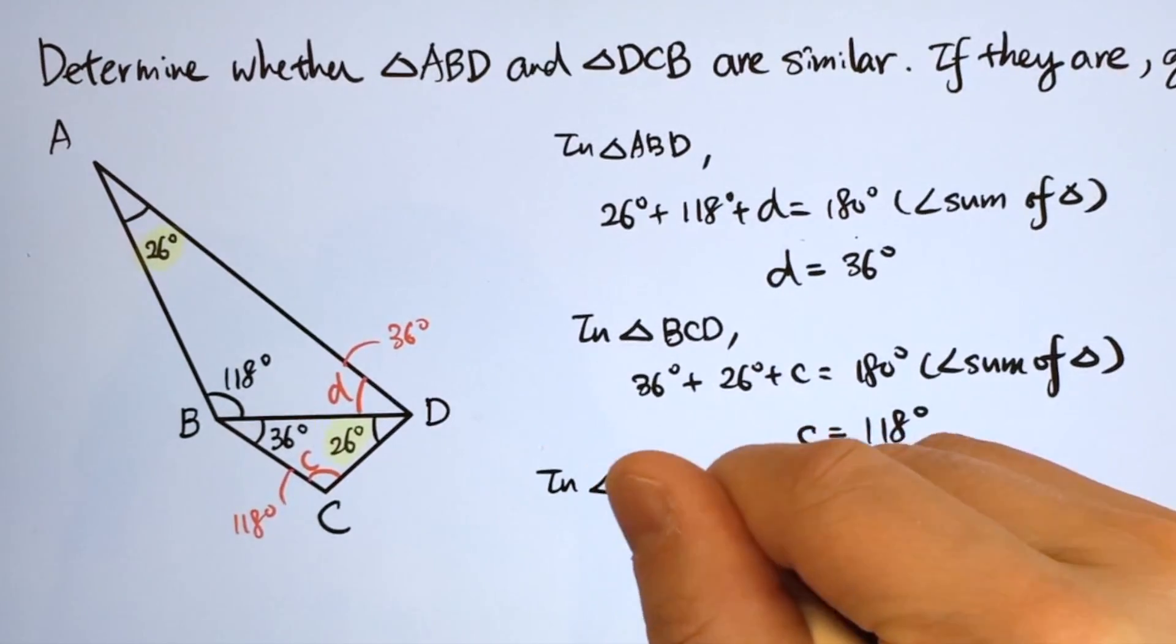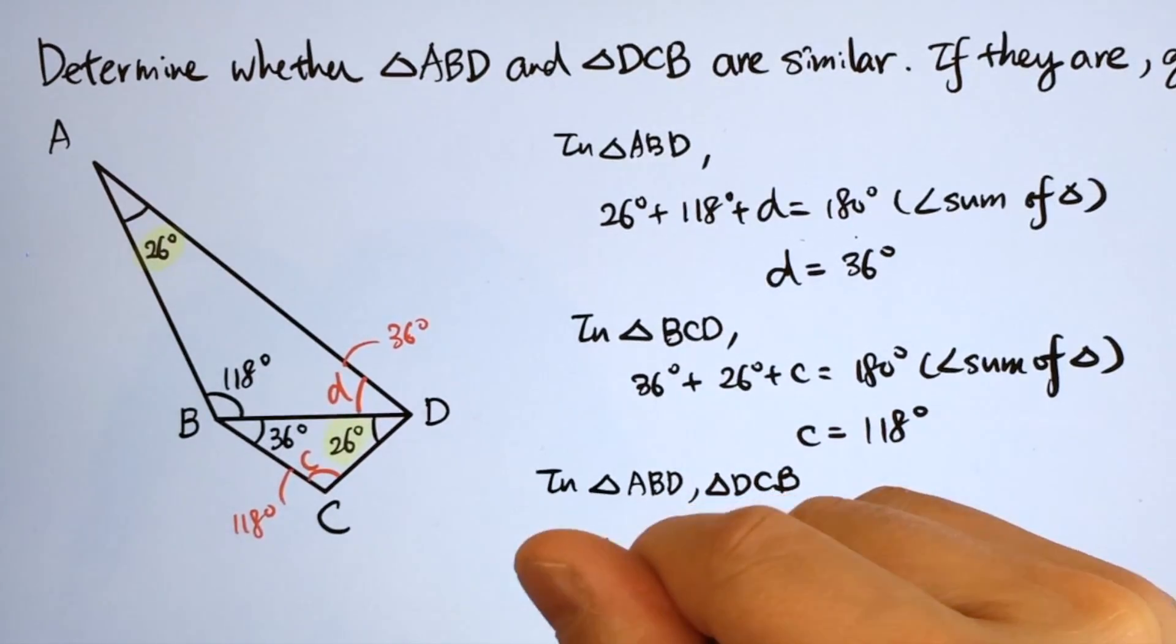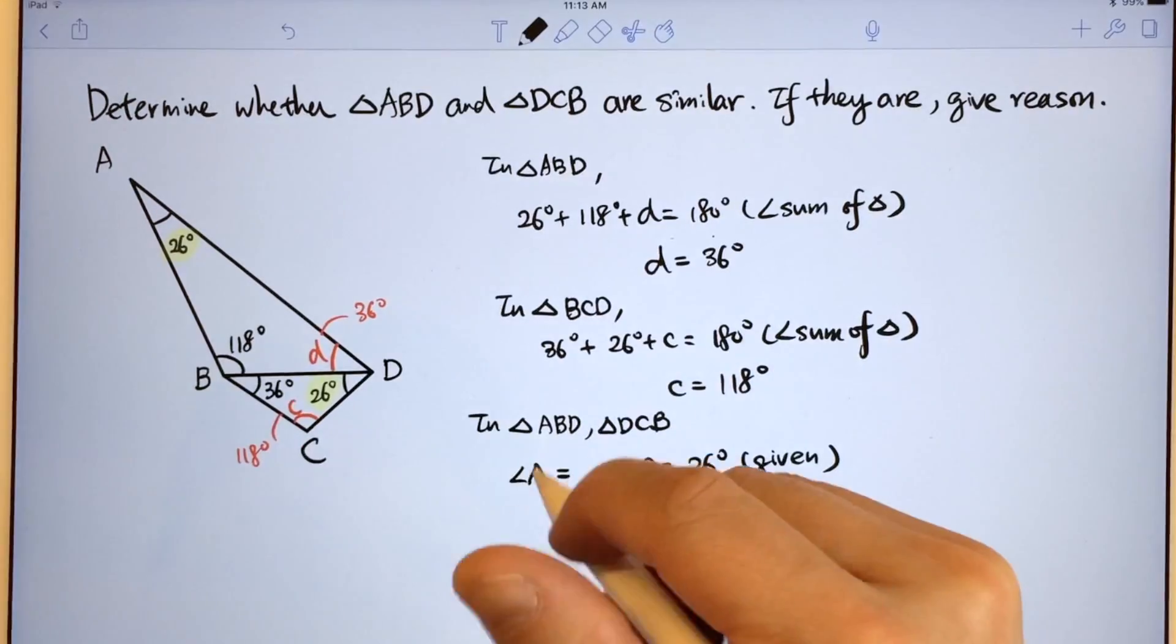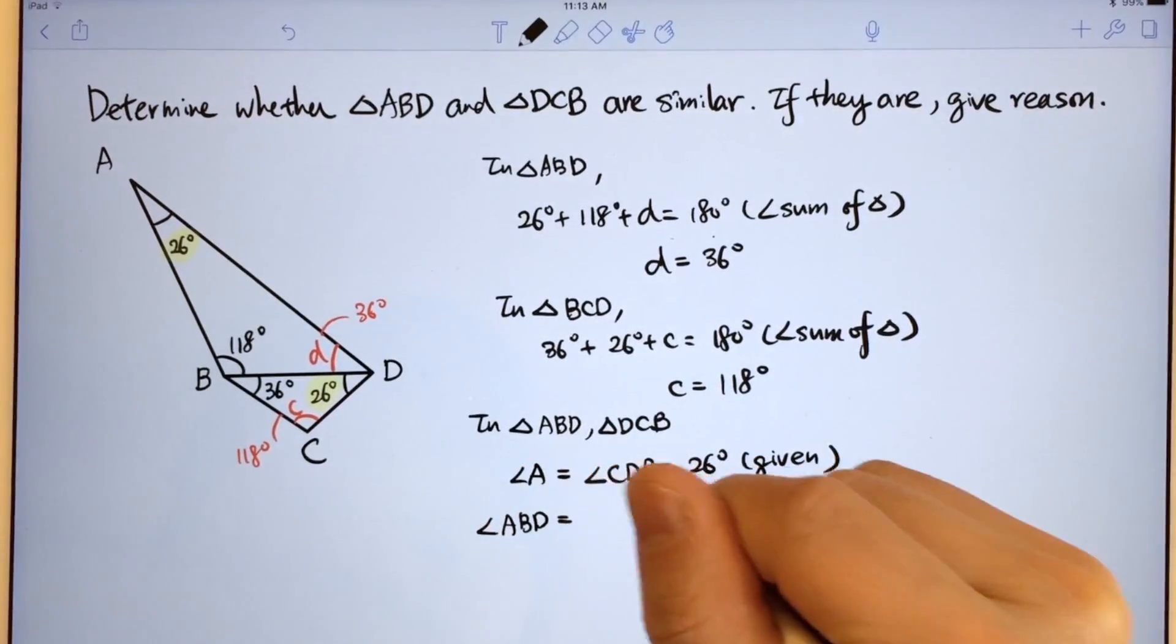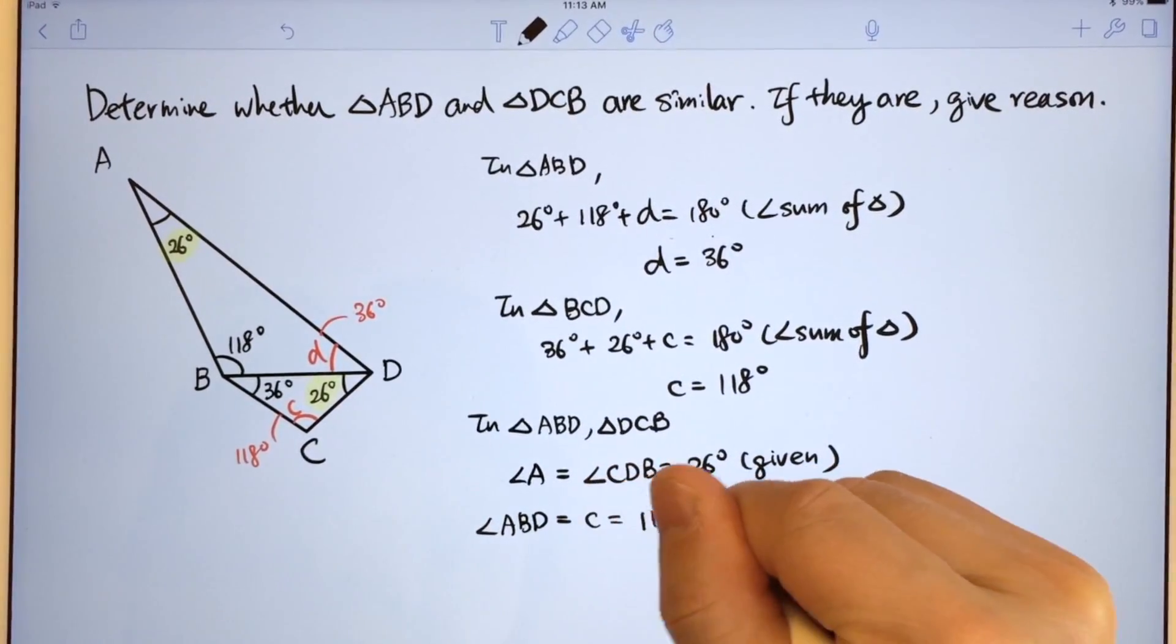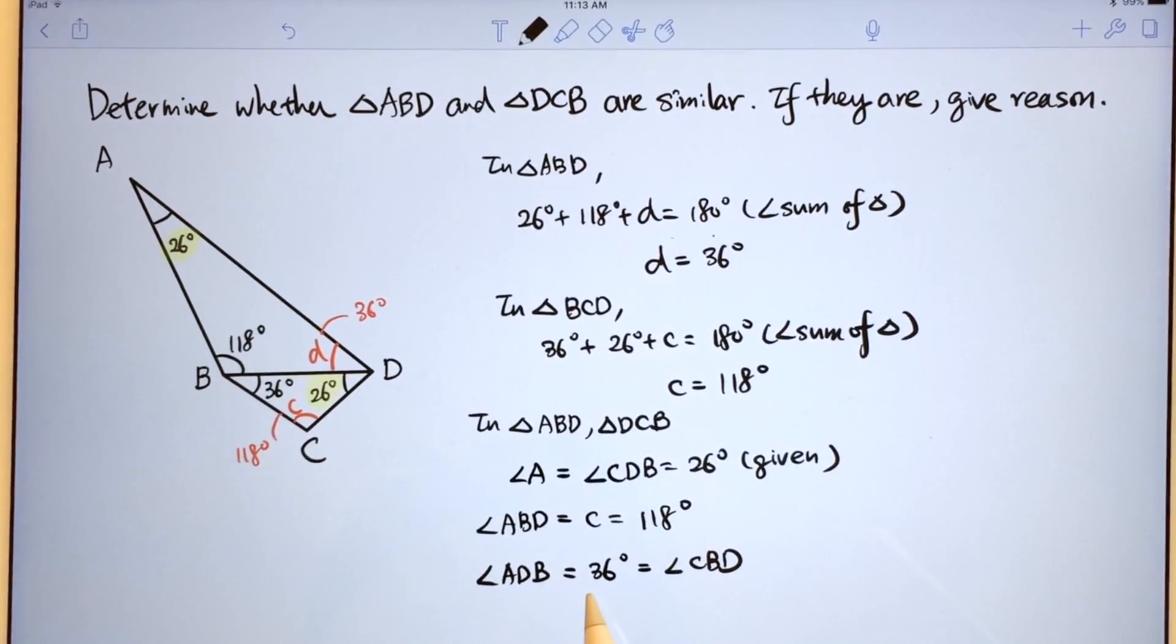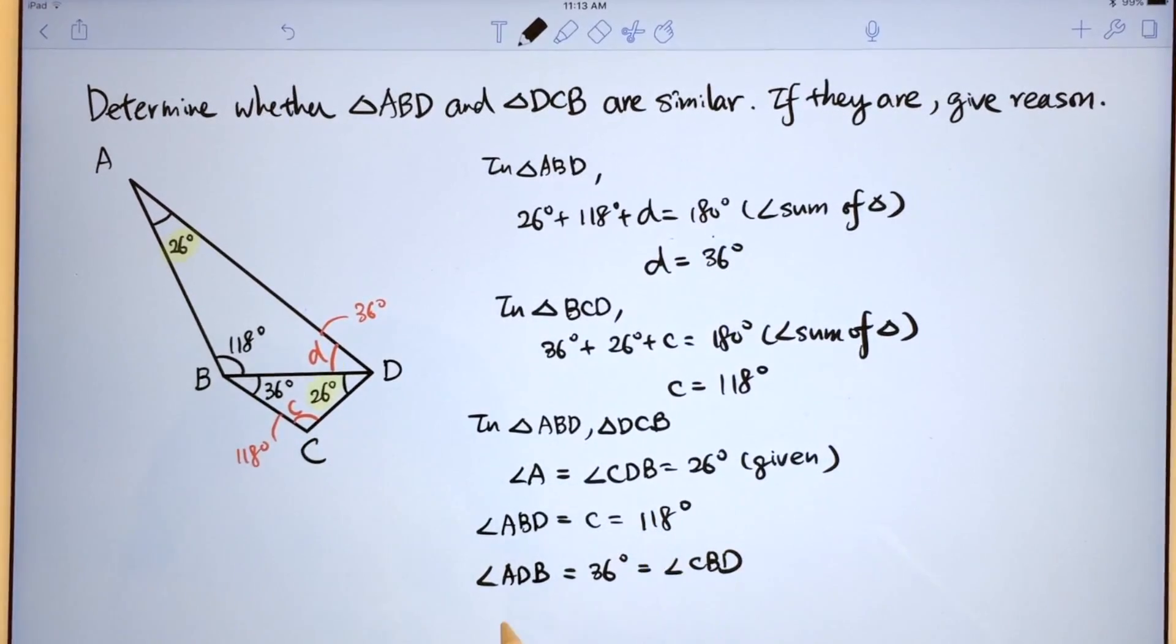Therefore in triangle ABD and triangle DCB, angle A equals angle DCB equals 26 degrees. Angle ABD 118 degrees equals angle C. Angle D equals angle DBC. They are similar.